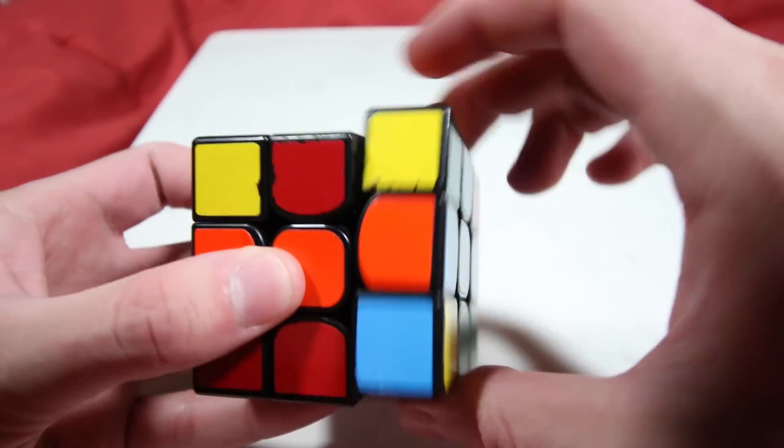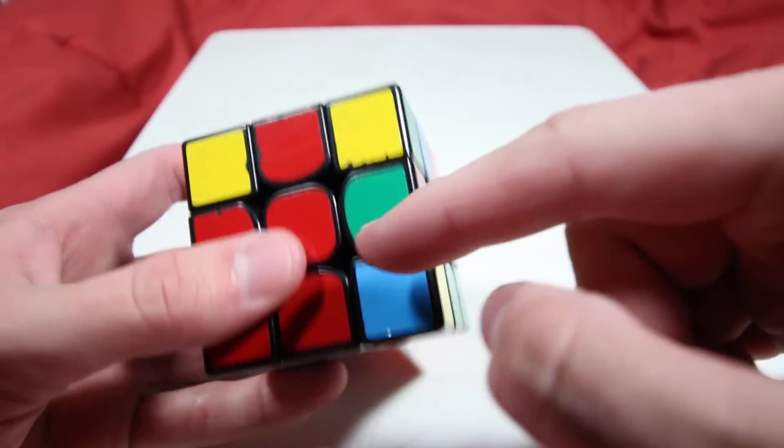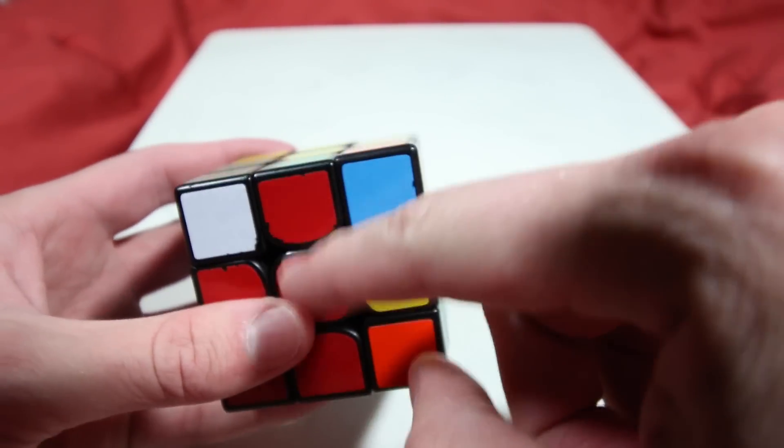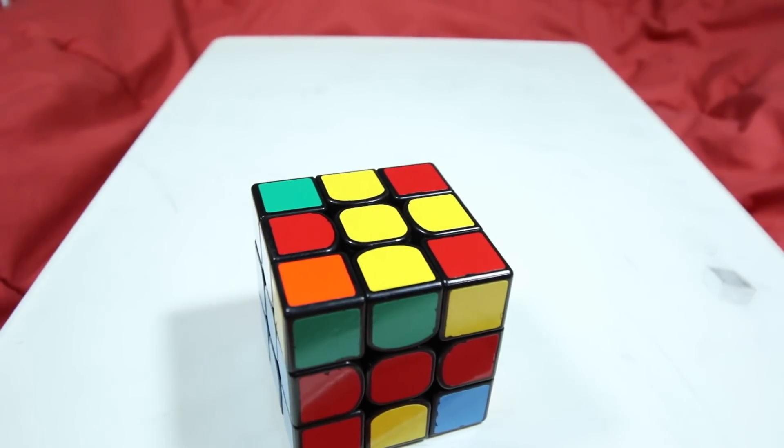And again, do not teach these as R U' R' and RW U R' instead just show them how the piece is moving and how they are actually putting the piece into the slot using break and restore. I've already taught a beginner with this method, and the break and restore technique is not difficult for them to understand.